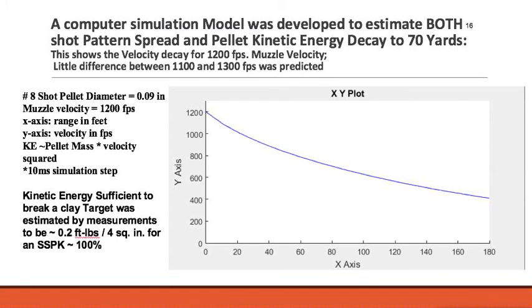This gave us a curve showing the velocity of a number 8 shot pellet as it travels downrange. On the x-axis is the range traveled in feet, and on the y-axis is velocity in feet per second. By the time you reach the interception range of about 30 yards, you've lost almost half your velocity. This holds true even with higher muzzle velocity — downrange velocity is a very weak function of muzzle velocity, so you don't gain much by increasing it.